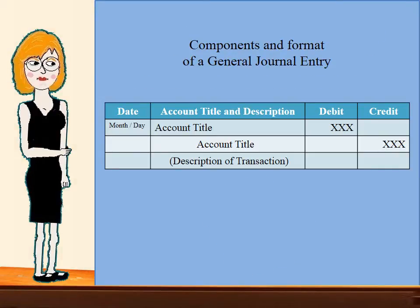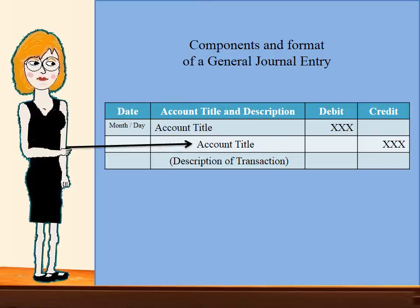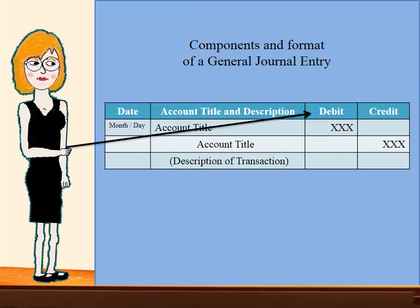Now let's look at some components and format of a journal entry. The date, which is recorded as the month and day. The year is usually on the cover of the journal or at the top of the date column. Account titles and descriptions — you will have one debit and one credit. Sometimes you will have more if it's a compound journal entry, but you must have at least one debit and one credit. The third component is a description of the transaction; keep it brief and try not to use too many adjectives or adverbs. The left hand column is referred to as the debit column and the right hand column is referred to as the credit column.